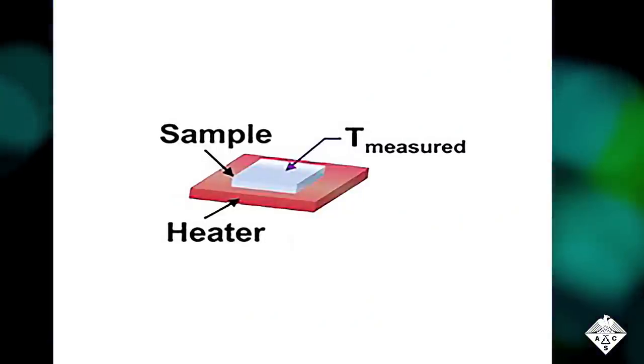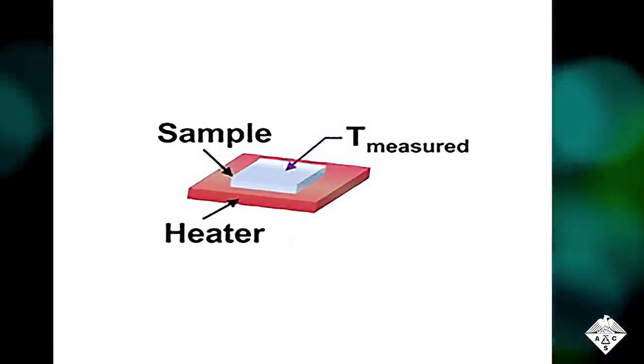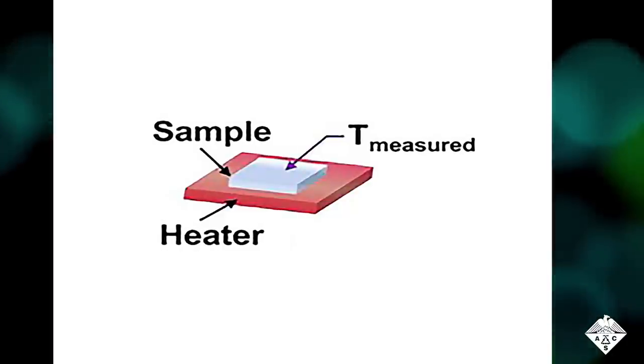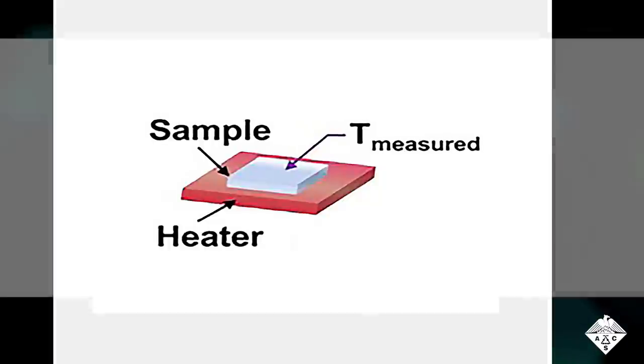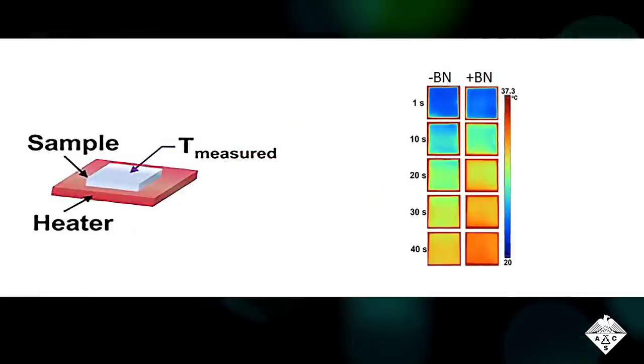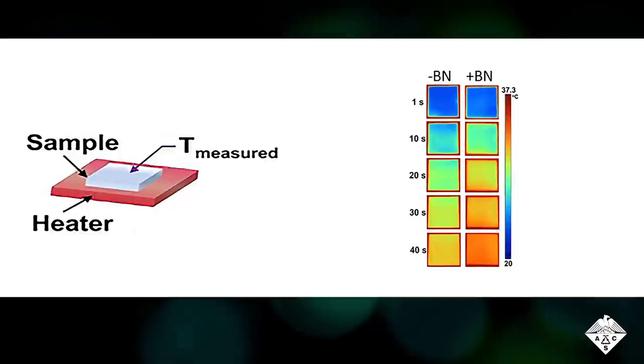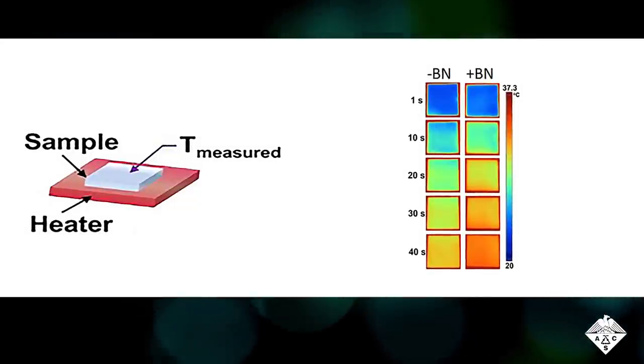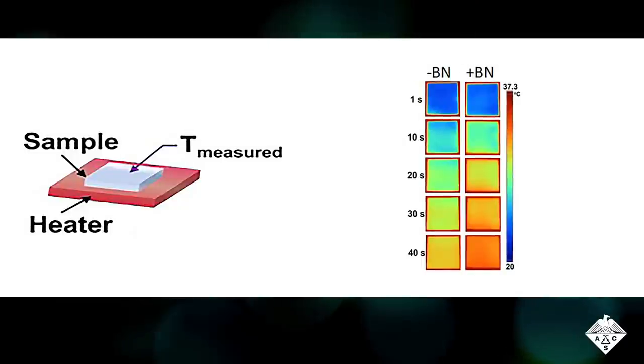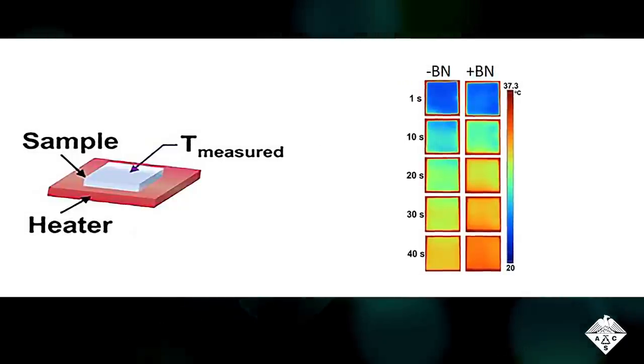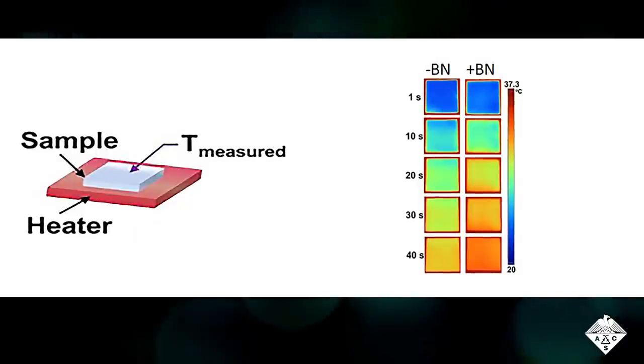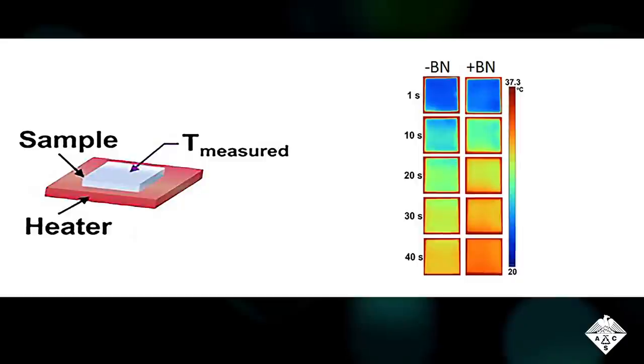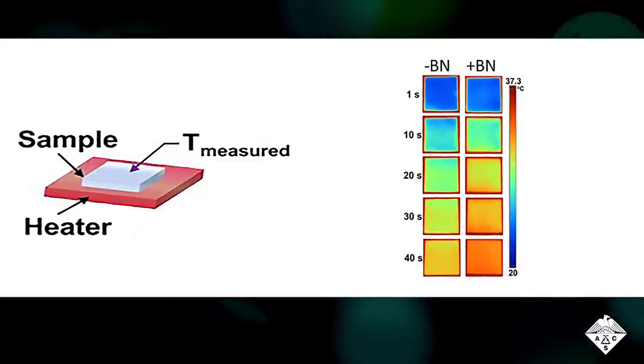In another experiment, the team placed the fabric on a heater to simulate human body heat. They measured the temperature on the outside of the fabric to see how well the material conducted heat to the outside. These infrared thermal images show that, compared with the material on the left that didn't contain boron nitride, the material on the right transferred heat to the outside air more efficiently. After 40 seconds, the surface temperature of the material that contained boron nitride was about 2.2 degrees Fahrenheit or 1.2 degrees Celsius higher than the same material without the thermal conductor.